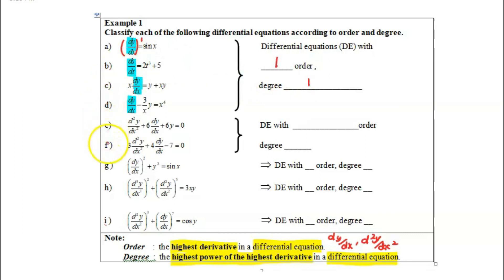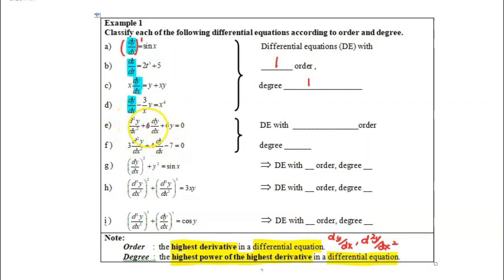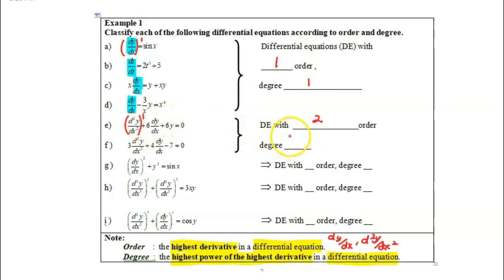Let us move on with E and F. In equation E, we have d²y over dx² plus 6 dy/dx plus 6y equals 0, in which we have two derivatives. dy/dx is the first derivative, and d²y over dx² is the second derivative. So the highest derivative found in this equation is the second derivative, therefore the order is 2. The highest derivative has power 1, so the degree is 1.